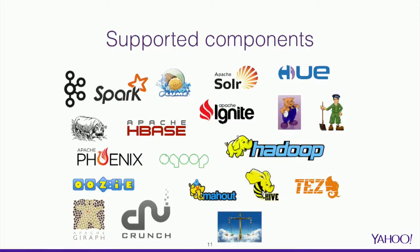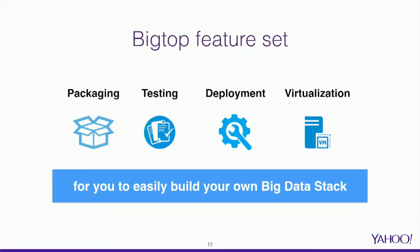So here comes Apache Bigtop. It's a project which mainly focuses on building Hadoop distributions for system admins. We take source code from upstream projects and offer you a build framework to produce RPM and Debian packages. Bigtop not only does packaging — it does packaging, testing, deployment, and virtualization as a whole stack, because if you only have packaging you still need to test functionality for deployments before you can say the packages are good to go to production.